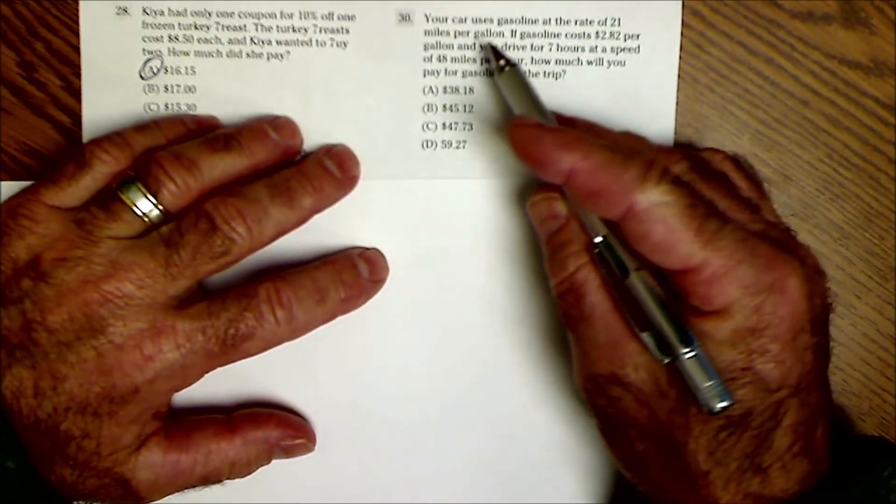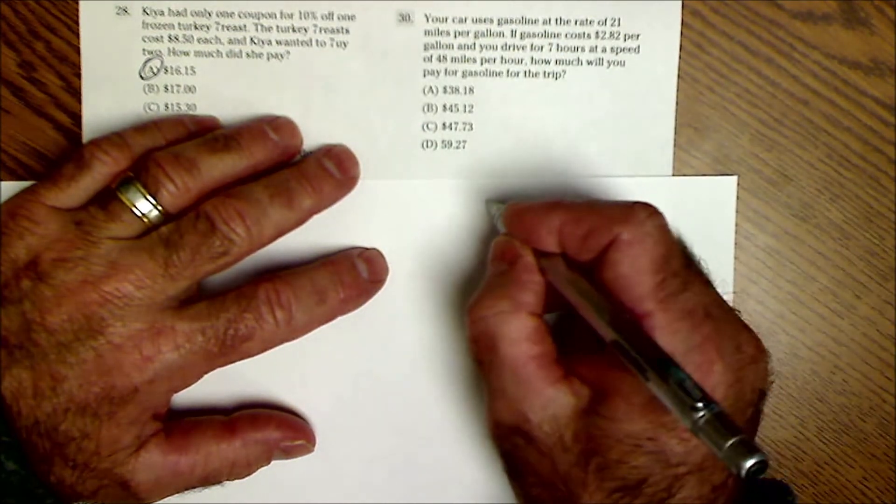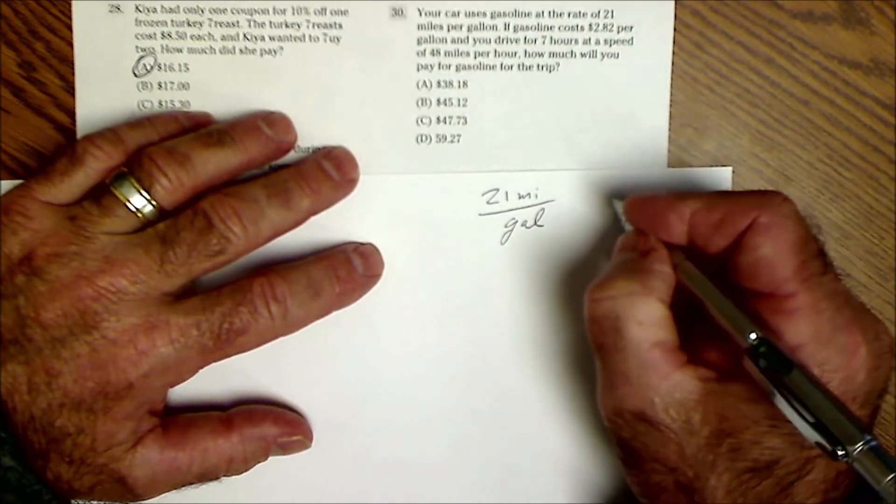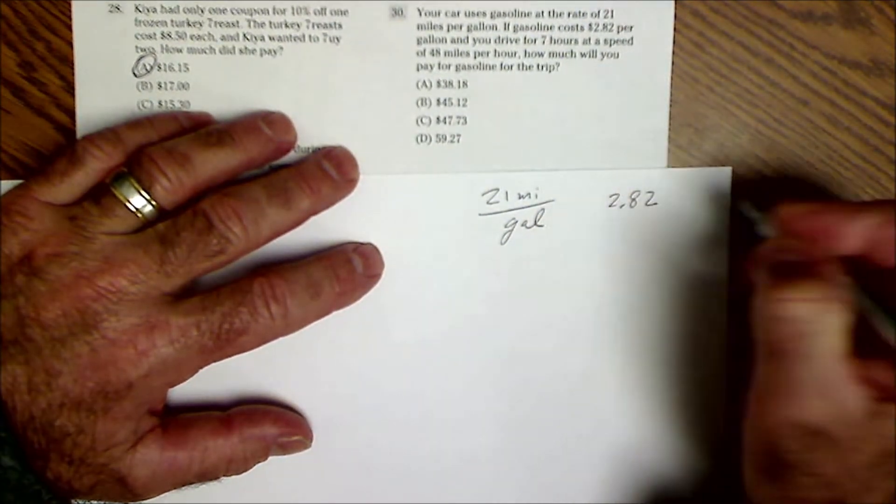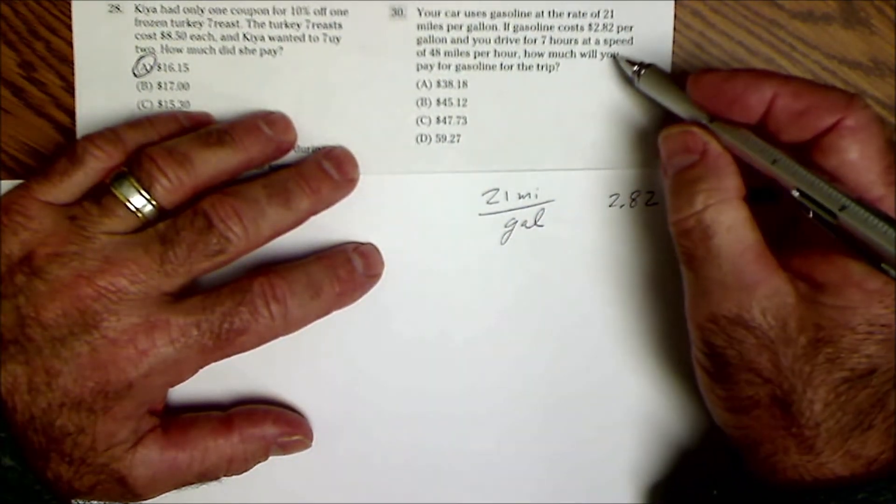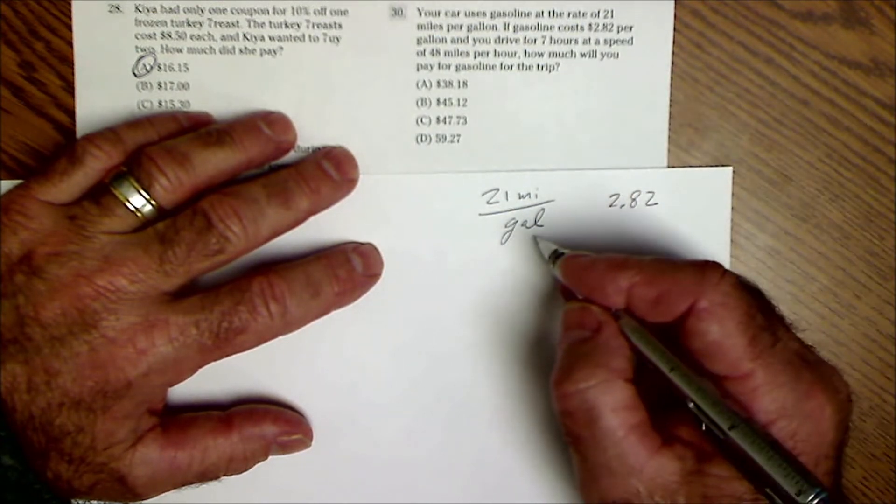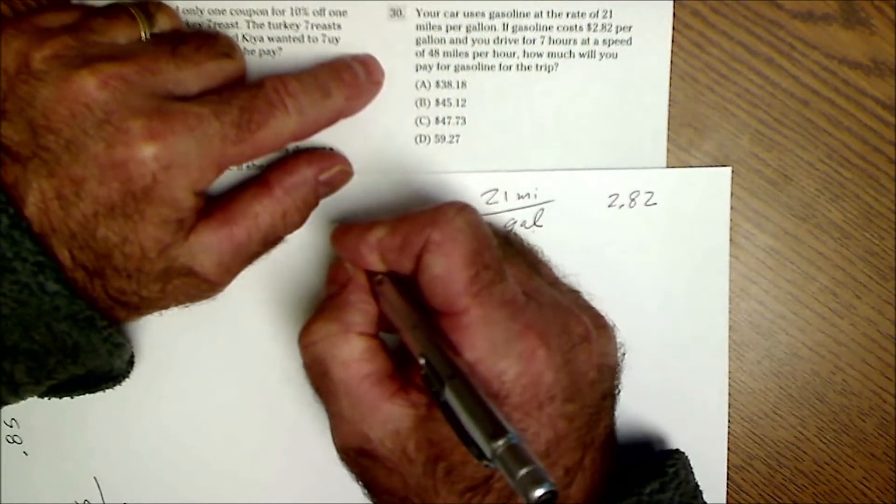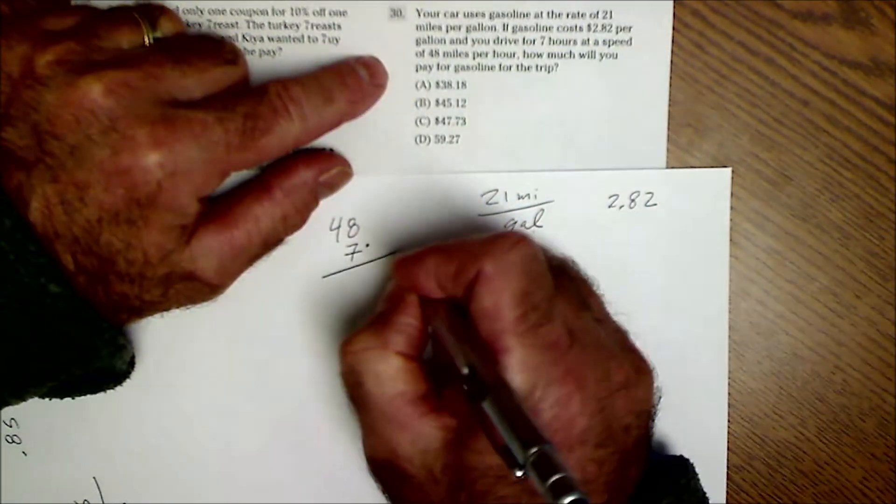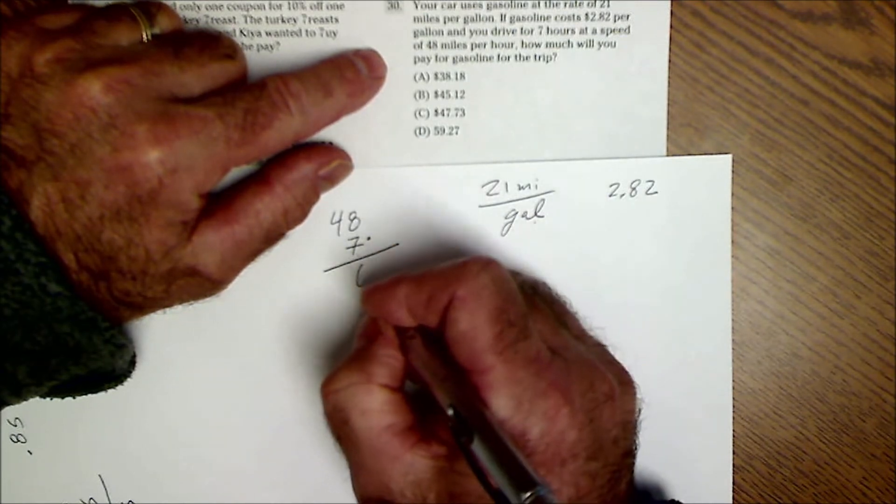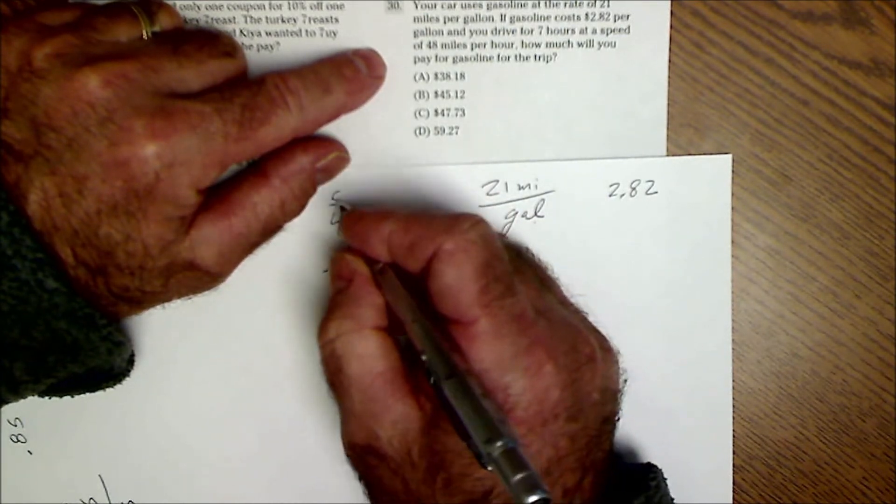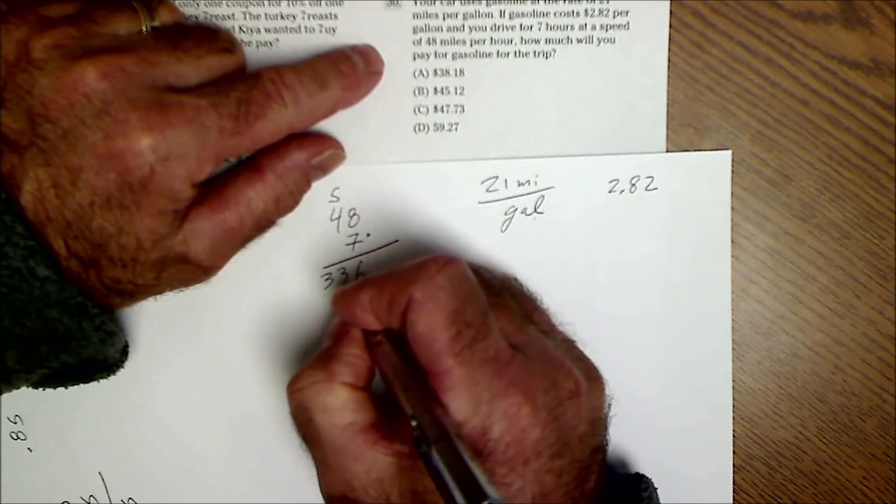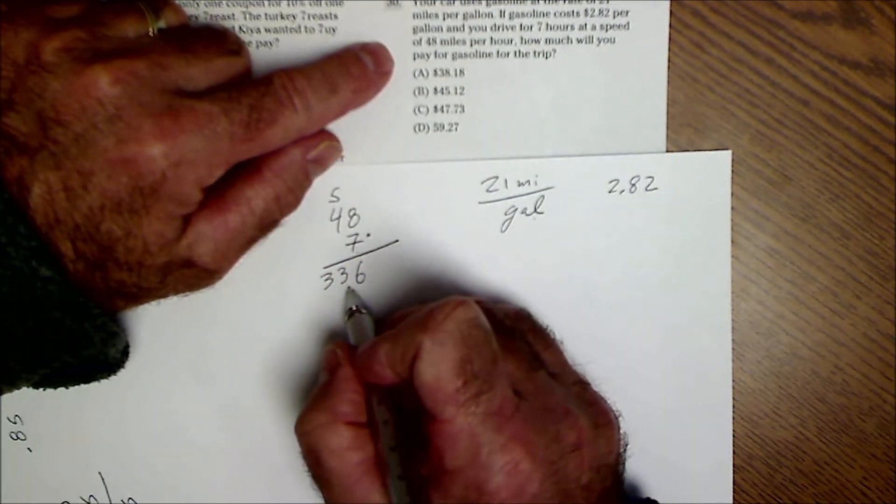Last problem. Your car uses gasoline at a rate of 21 miles per gallon. The gas costs $2.82 per gallon and you drive for seven hours at a speed of 48 miles per hour. How much will you pay for gasoline for the trip? We're driving 48 miles per hour times seven hours is 56, 28 plus the five, 28, 33. So I'm going to travel a total of 336 miles.